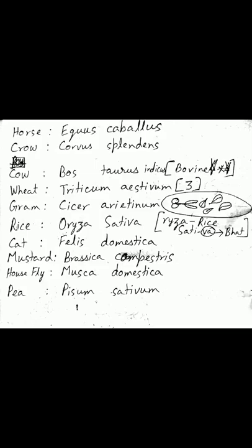Cow is Bos taurus indicus or Bos indicus. The word 'bovine' is a common English word meaning calm, docile, and innocent — it comes from the root bos/taurus. Indicus means from India. So cow is Bos taurus indicus.